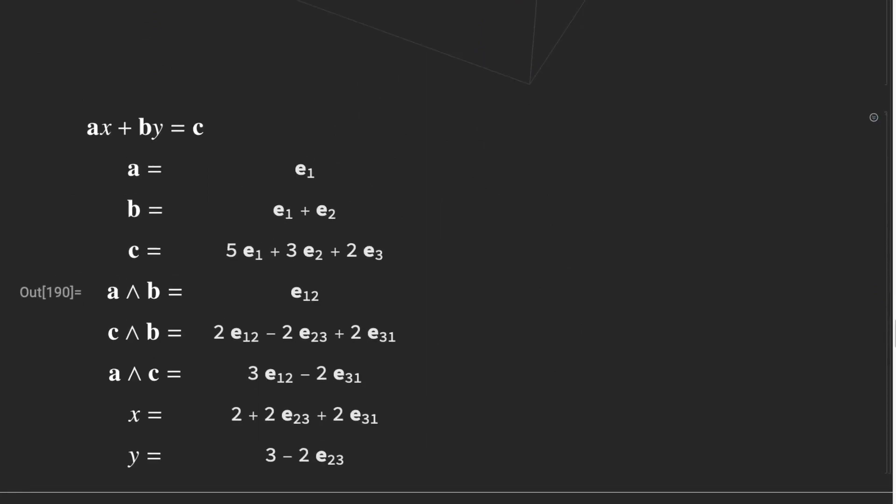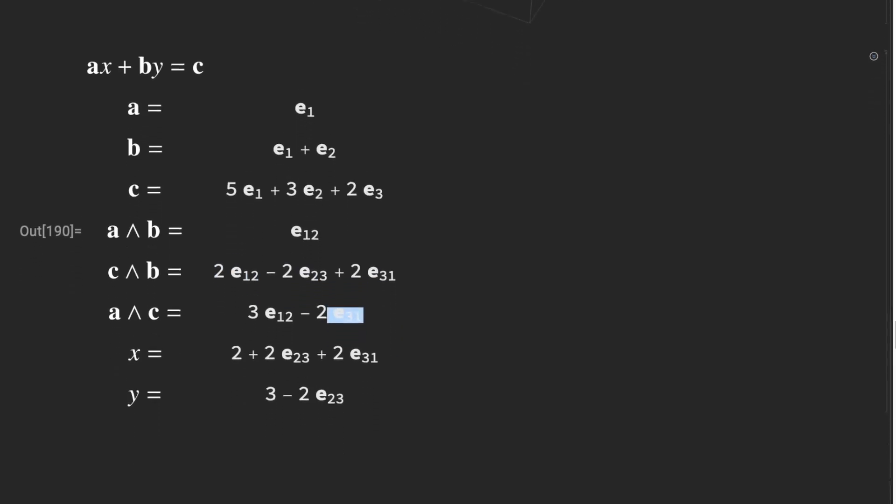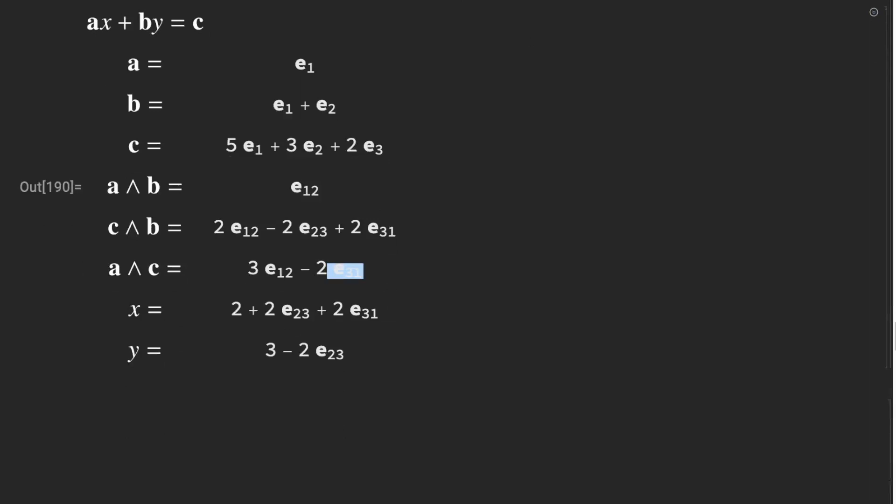If we try to solve this using the method that we constructed, we find here's our a wedge b, again is e12. Now, c wedge b and a wedge c are no longer our scalar multiples of each other, of our a wedge b. We happen to have c wedge b including 2 and 3 times the a wedge b component. But it also, we have components that include e13, bivector components. Should we divide these out, assuming that we have a solution, we now have a multivector as the result when we expected a scalar. We have x equals 2 plus a bivector, and y equals 3 plus a bivector. It's these bivector terms in the solution that we have to come up with a method of dealing with those.